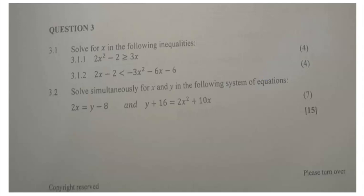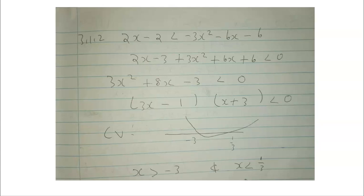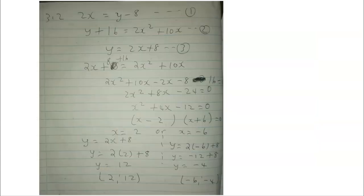Question 3 was about inequalities and simultaneous equations. For the first inequality, I first found the factors, then the critical values, which were negative 1 over 2 and 2. Drawing a number line with a smiley face, the two solutions were: x is greater than 2, or x is less than or equal to negative 1 over 2. For the second inequality, grouping numbers gave a trinomial with critical values negative 3 and 1 over 3, giving solutions x greater than negative 3 or less than 1 over 3.